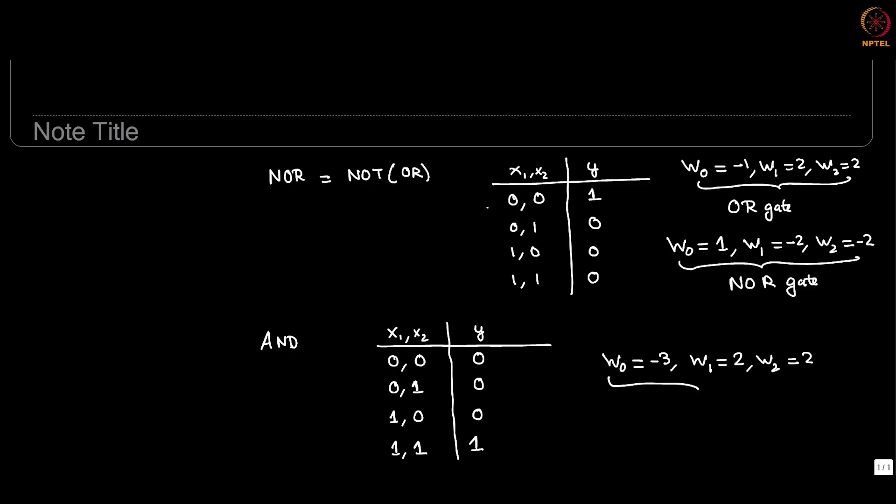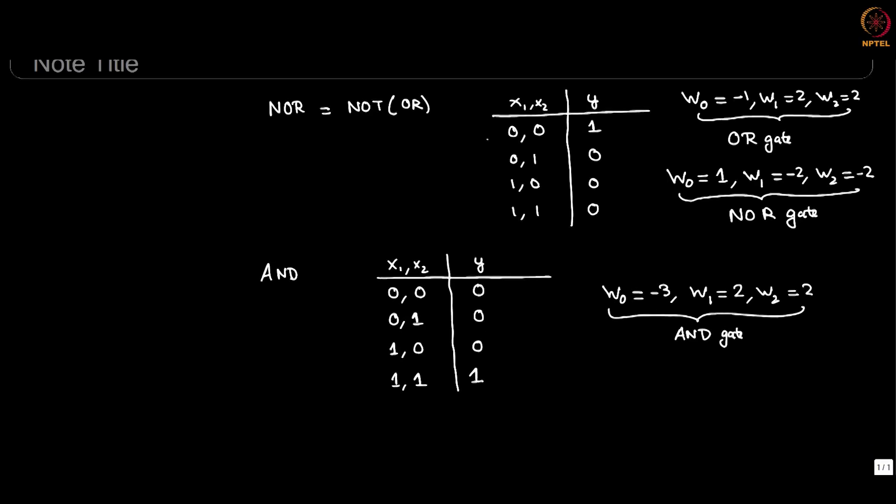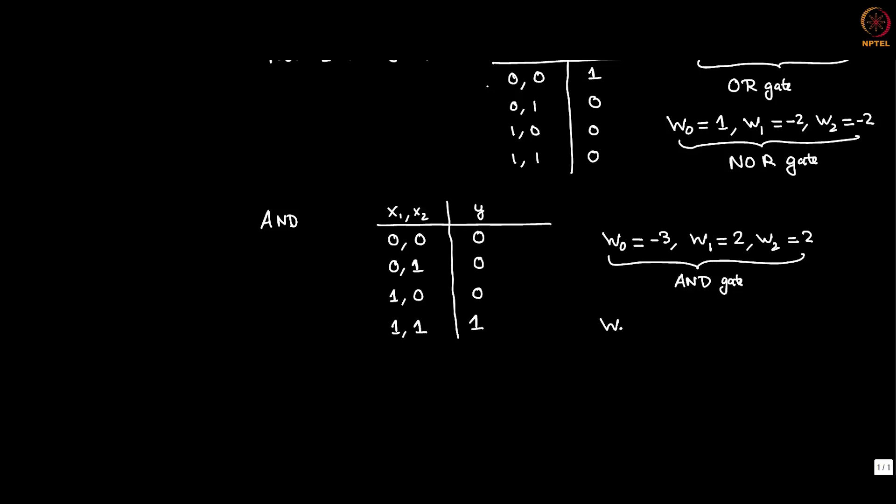This case is the AND gate and you can easily guess that the NAND gate would simply be the negative of these weights.